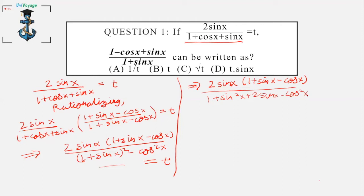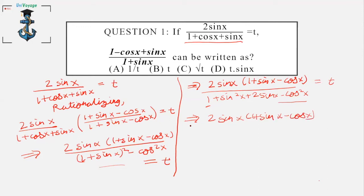Remember the formula: 1 - cos²x = sin²x. Substituting that value in, we get 2sinx·(1 + sinx - cosx) divided by 2sin²x + 2sinx, which equals t.